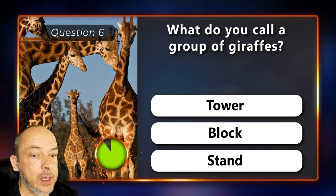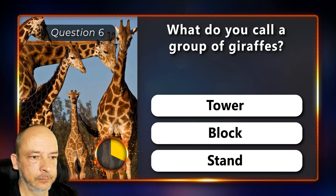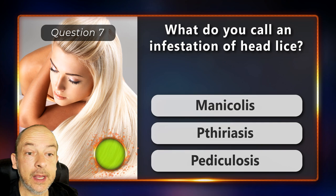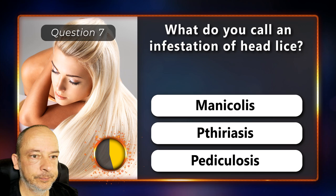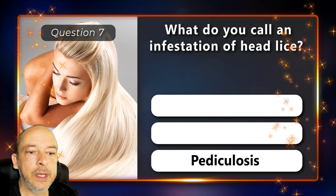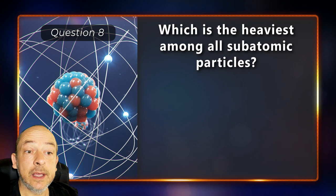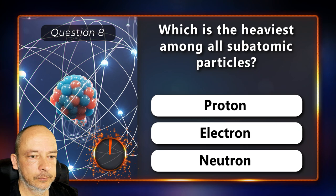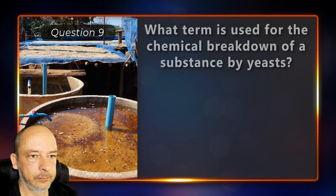Question 6: What do you call a group of giraffes? Is it a tower, a block or a stand? It's called a tower. Question 7: What do you call an infestation of head lice? Manicolus, thoriasis or pediculosis? Pediculosis. Question 8: Which is the heaviest among all subatomic particles? Is it the proton, electron or neutron? It's the neutron.